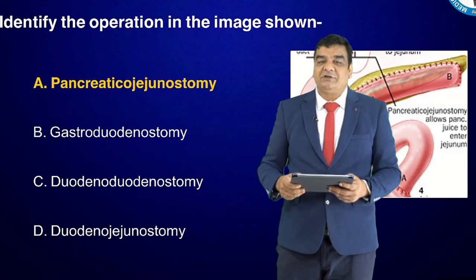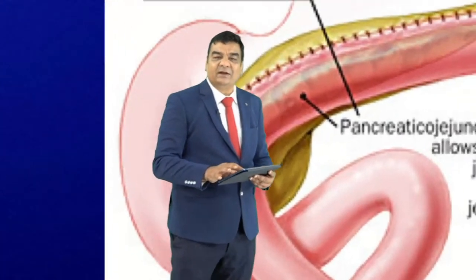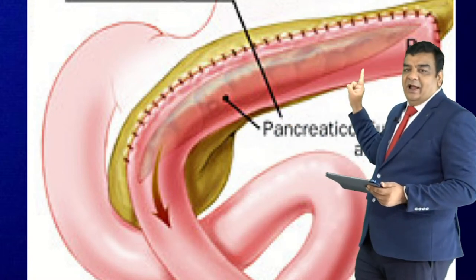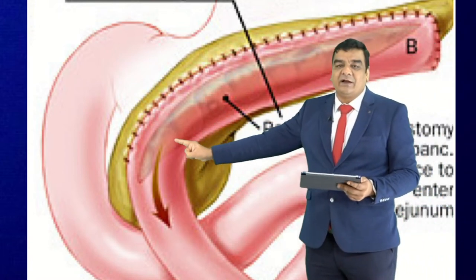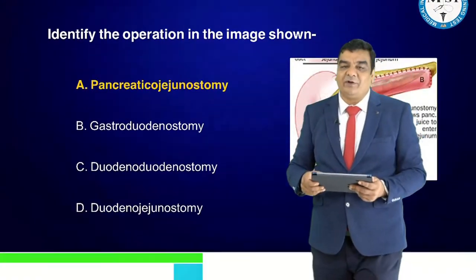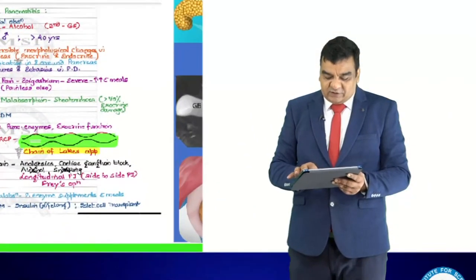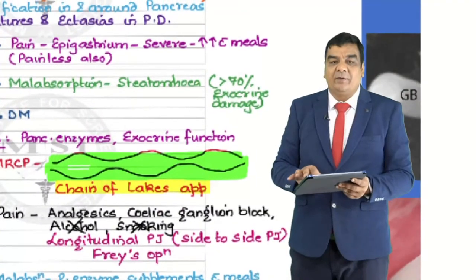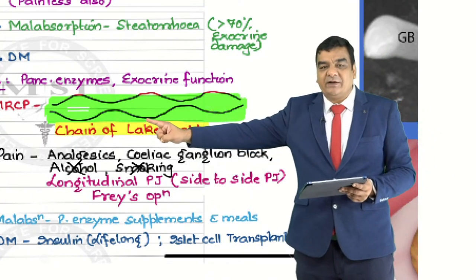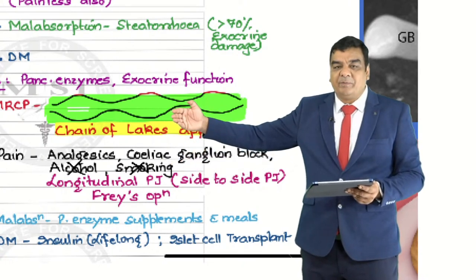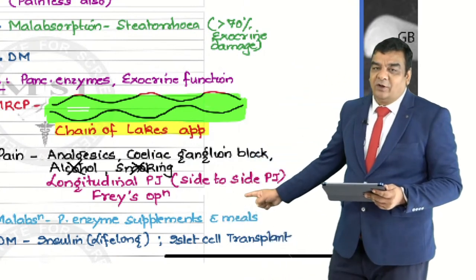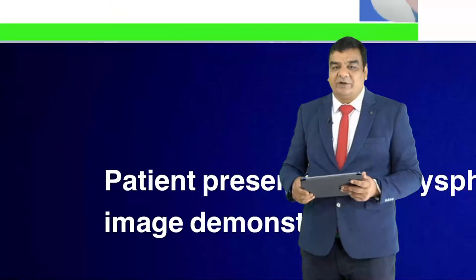Another question: identify the operation in the image below. In this image, the jejunum has been connected with the pancreatic duct — this is a side-to-side pancreatic ojejunostomy, done in the treatment of chronic pancreatitis. In chronic pancreatitis, there is a chain of lakes appearance — multiple dilatations in the pancreatic duct — and the side of the jejunum is anastomosed with the side of the pancreatic duct. This is the modified Puestow operation, or longitudinal side-to-side pancreatic ojejunostomy.